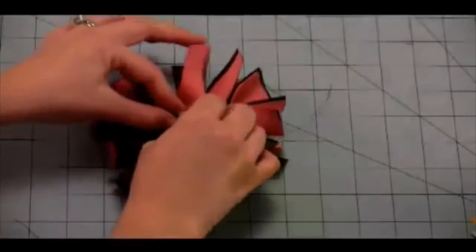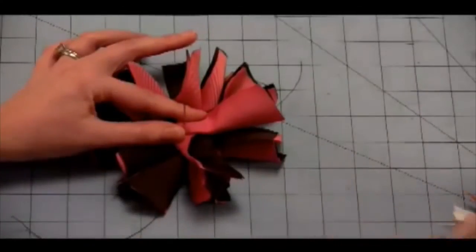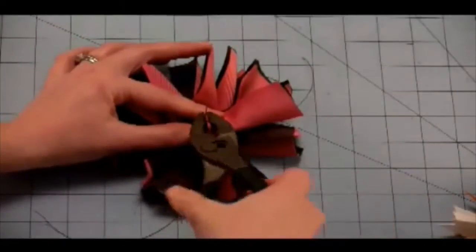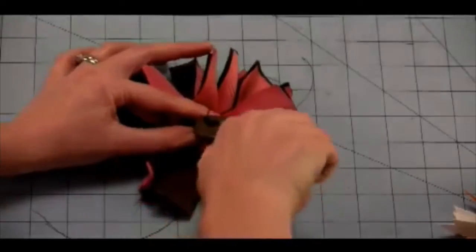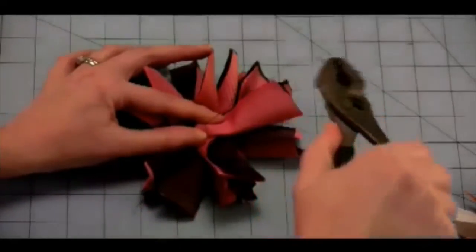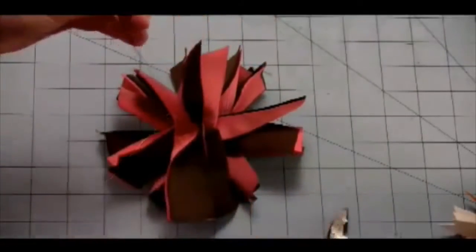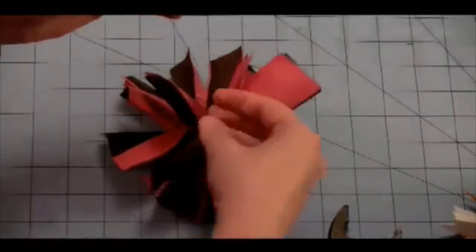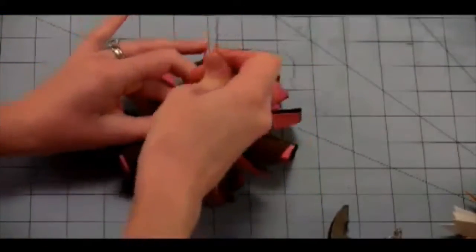we are going to push carefully and pull our needle through. Now you might want to grab a pair of pliers because sometimes it's hard to get this needle through. Okay, so I'm just going to pull gently with my pliers. Grab the end of that needle and just push these all back down.